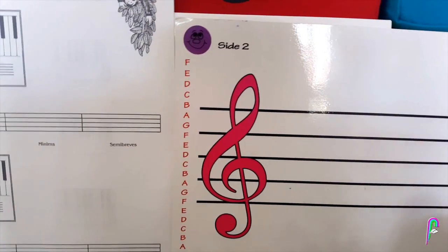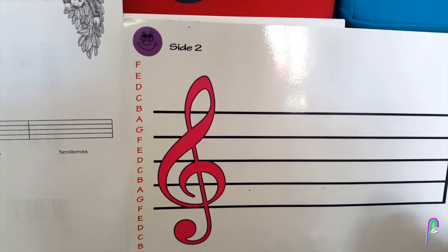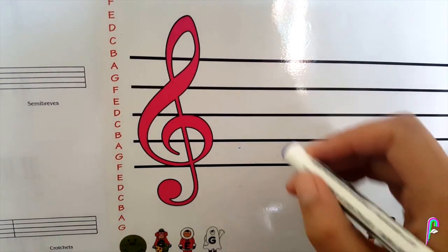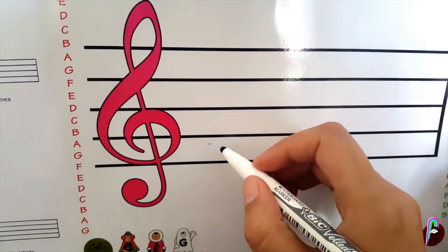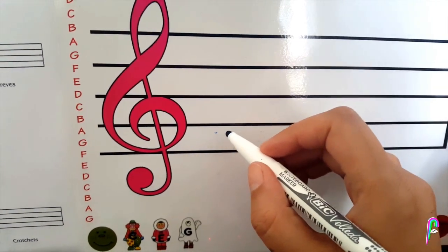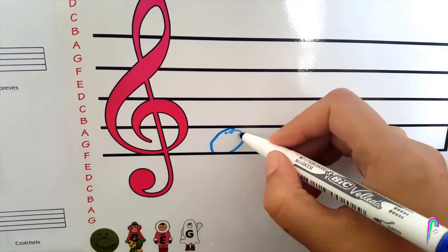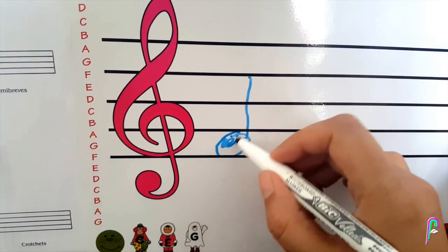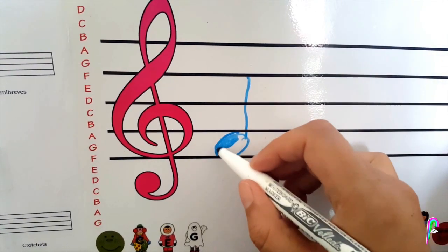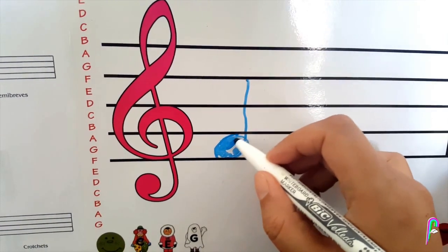So we're going to draw those and I'm going to show you one of each on each line for F and G. So F starts here. You'll already know C, D and E because you've done that in the previous weeks. So an F is in this space. Let's just make that into a crotchet.